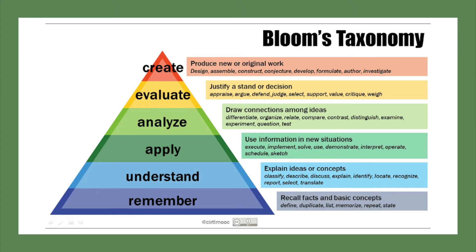The fourth level of Bloom's Taxonomy is analyzing. At this level of thinking, you need to be able to break down the parts of a concept or topic in order to see how they relate to one another. One common method is to compare and contrast two items. In our restaurant example, we would first determine categories for comparison — let's choose price, atmosphere, and food quality — then rate each restaurant in each of these areas to see how they are alike and different. This takes a bit more thinking and in-depth understanding of the topic.